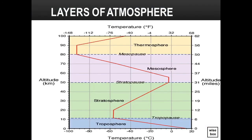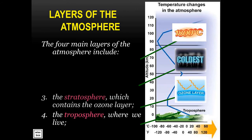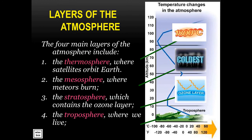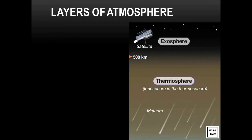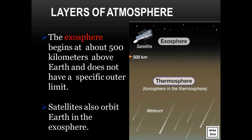Here you may notice the relationship between the altitude and the temperature in each layer of the atmosphere. The four main layers of the atmosphere include: the troposphere, where we live; the stratosphere, which contains the ozone layer; the mesosphere, where meteors burn; and the thermosphere, where satellites orbit Earth. The exosphere begins at about 500 kilometers above Earth and does not have a specific outer limit. Satellites also orbit Earth in the exosphere.